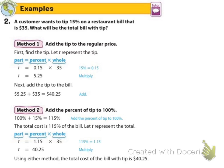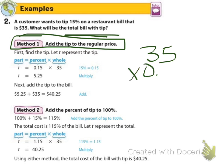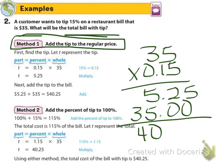Example number two says a customer wants to tip 15% on a restaurant bill that is $35. What will be the total bill with tip? So method one, please write this down. Add the tip to the regular price. So in this method we're finding the tip and then adding it into the regular price. We change it to a decimal and we multiply 15% times 35. So 35 times 0.15. We find that amount, which is $5.25, and we add it into the $35 cost so that we can find out what we need to leave for our total bill. So this is the exact amount of money that we're leaving on the table to cover the bill plus the tip. If you left $5.25 and that's it, you're not paying for your lunch.